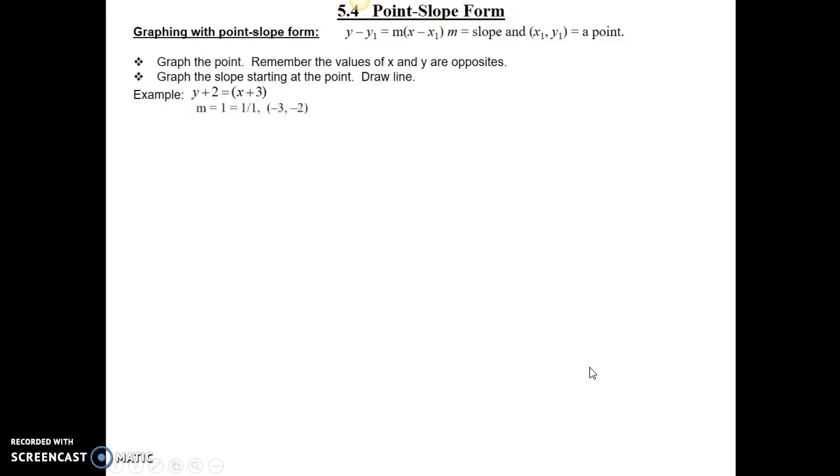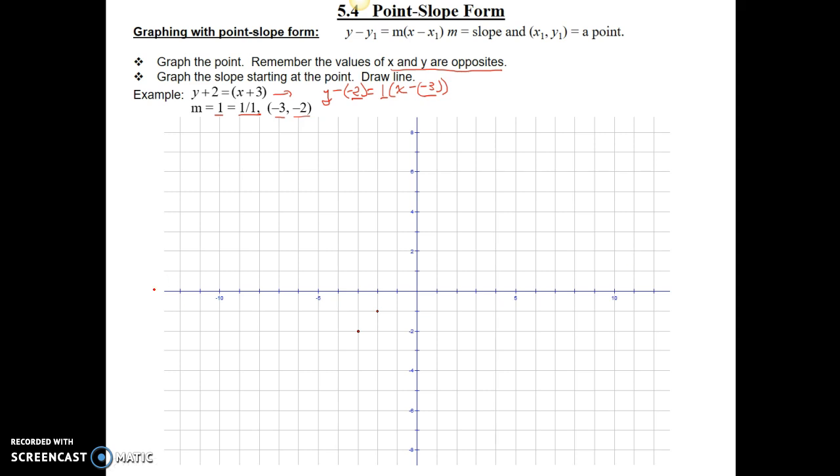Let's move on to another example. Now, remember we said the x and y values are actually opposite of what they appear. So this would actually be y minus negative 2 equals 1 times x minus negative 3. That's why my x value is negative 3, my y value is negative 2, coming from right here, and then my slope is 1, which as a fraction would be 1 over 1.